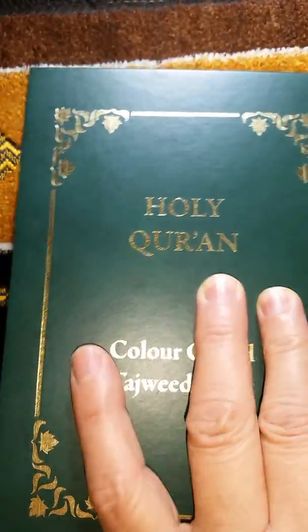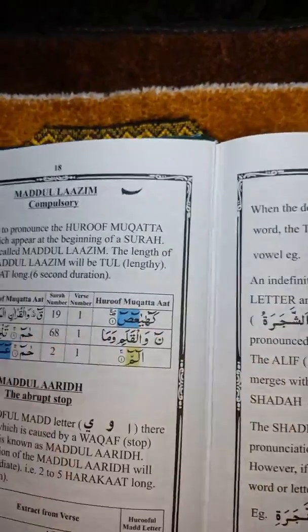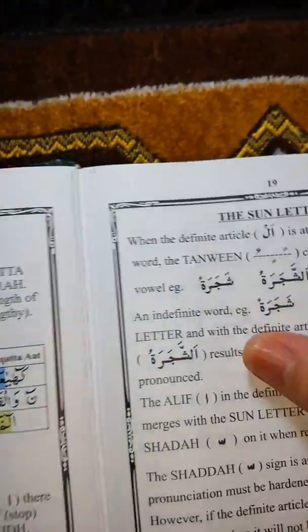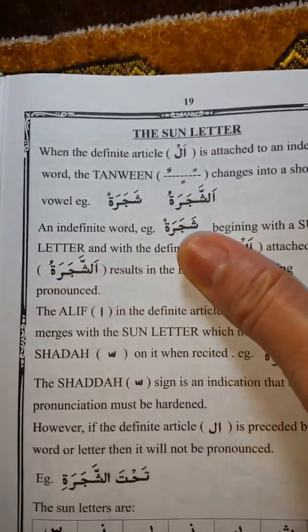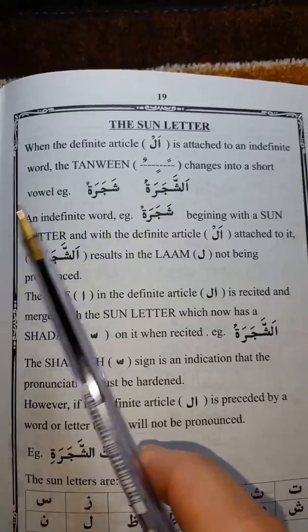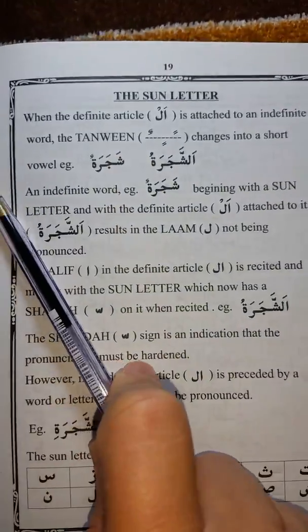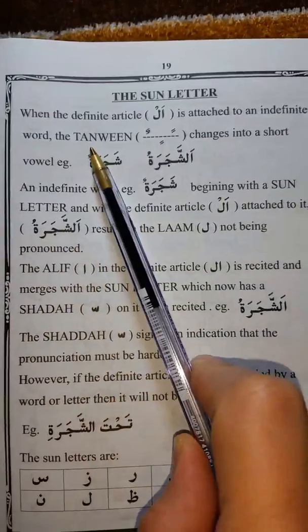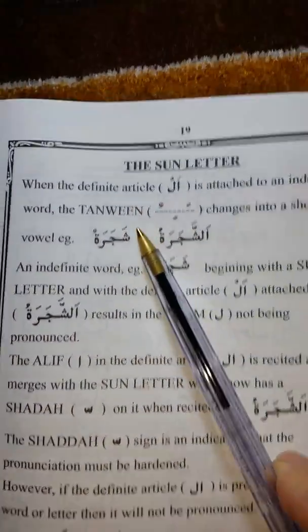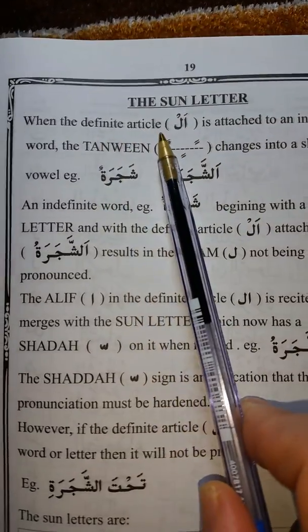Okay, we start. Our lesson today is the sun letter. There are two of them actually — one is the sun letter and the other one is the moon letter. This time we will learn about the sun letter.